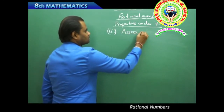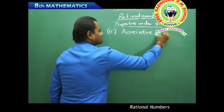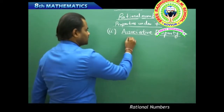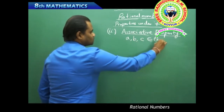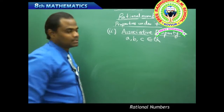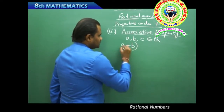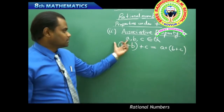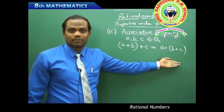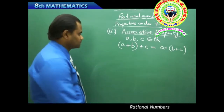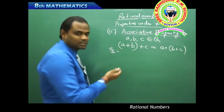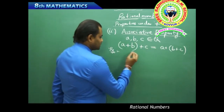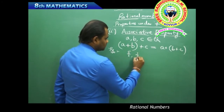The second property under addition is the associative property. If a, b, c belong to Q, then (a + b) + c = a + (b + c). The grouping of rational numbers in addition does not affect the result. We can verify this with three numbers: 5/2, 1/3, and 1/2 belonging to Q.